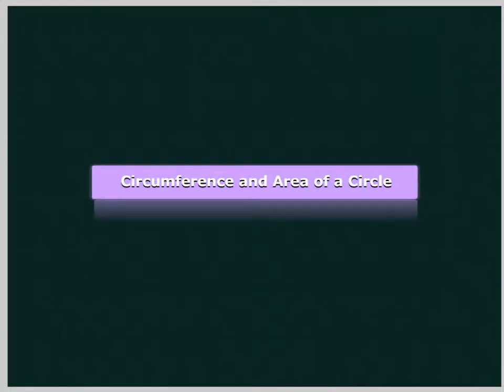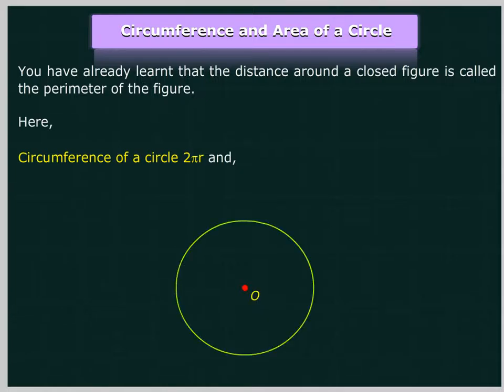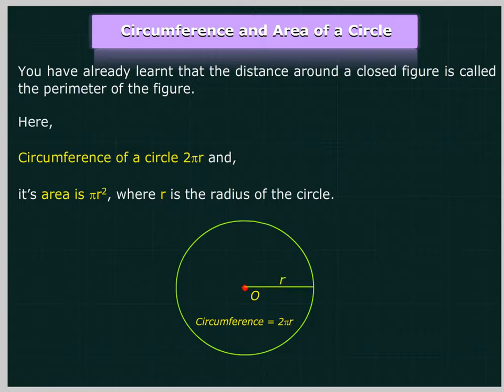Circumference and area of a circle. You have already learnt that the distance around a closed figure is called the perimeter of the figure. Here, circumference of a circle is 2πr and its area is πr², where r is the radius of the circle.